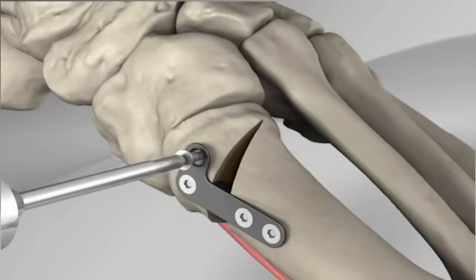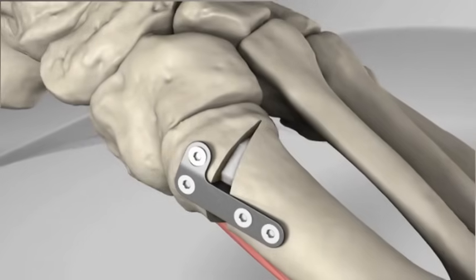Screws are then placed in the remaining holes in the plate and a bone graft substitute is placed in the gap.